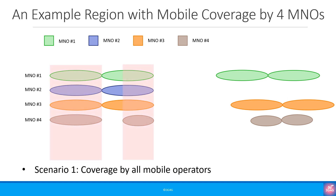The first scenario is that there are areas where all the mobile networks have coverage. Here, mobiles from any of the mobile operators will be able to camp on the network and use the services provided. This is the normal or expected mode of operation.